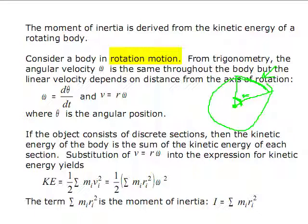Omega is the rate of change of angle with respect to time, and the velocity, the linear velocity of the particle, that's the radius times omega.